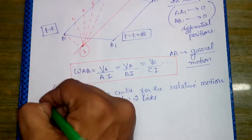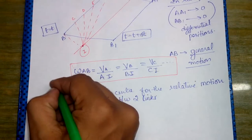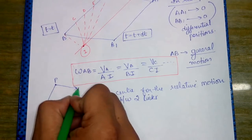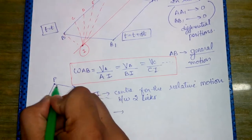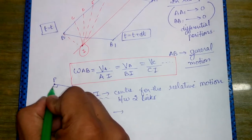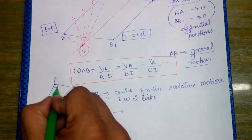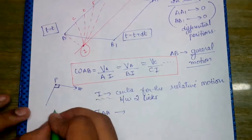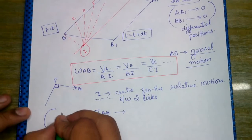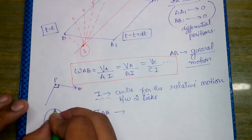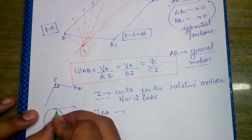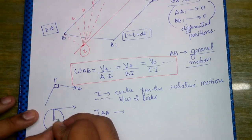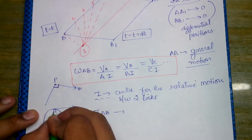If point P is on the link, the velocity of point P is always perpendicular to the line from the I-center to P. This is because in a circle the tangent is always perpendicular to the radius.